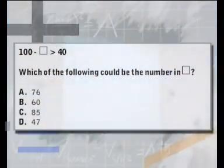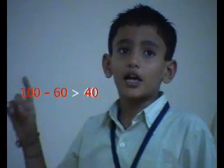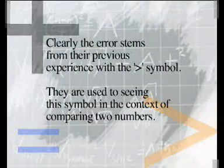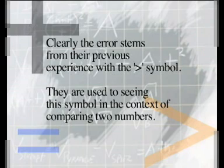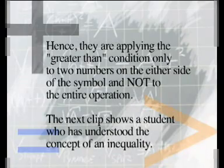I think that sign over there means this one is bigger. If this one is bigger, then what does the whole thing mean? 100 — can you put 60 over there? If I put 60 then 40 is smaller. 100 minus 60 is 40 and 60 is greater than 40. Like we minus something from 100 and we get the answer that is bigger than 40, so the answer will be 47.